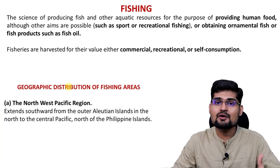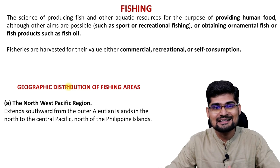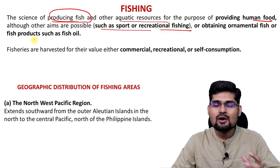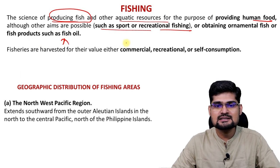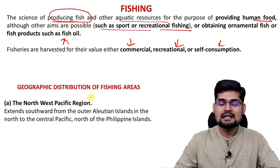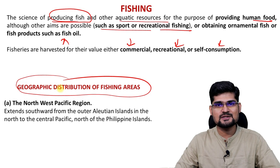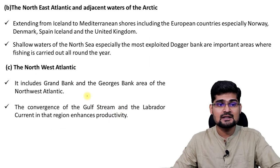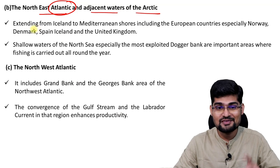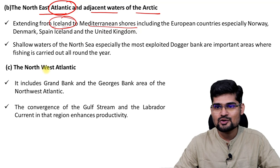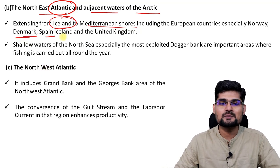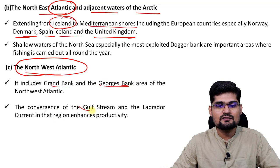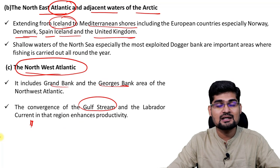Then comes fishing. Coming from India, fishing is really important because we are a peninsular country. Fishing involves producing fish and other aquatic resources for human food, commerce, recreation and ornamental purposes, done either commercially, recreationally or for self-consumption. Important geographic regions where fishing is prominent include: the North West Pacific region — Aleutian Islands, Central Pacific and Philippine Islands; North East Atlantic and adjacent Arctic waters extending from Iceland to Mediterranean shores, including Scandinavian countries, Norway, Denmark, Spain, Iceland, and UK; and the North West Atlantic areas — Grand Bank and Georges Bank — where the Gulf Stream and Labrador Current meet.